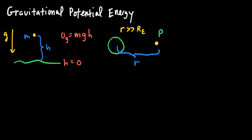The way we define gravitational potential energy for cases like point p or further away is a bit different. I'll show a few steps to help understand why we have the equation we'll use for these cases. For large distances from the center of the planet, we define the gravitational potential energy Ug to be zero when the point we're at is an infinite distance away from the center of that planet. So when the distance from the center equals infinity, gravitational potential energy is defined as zero.